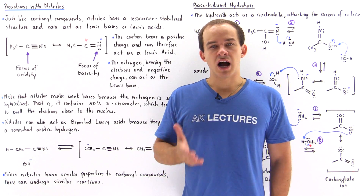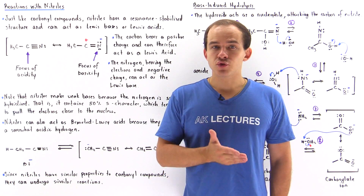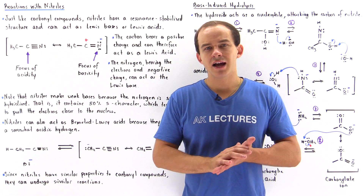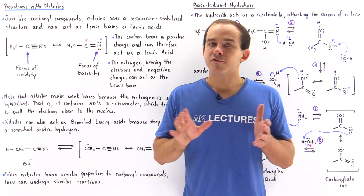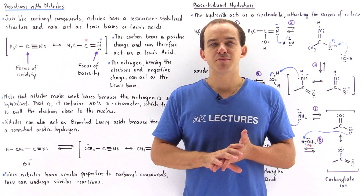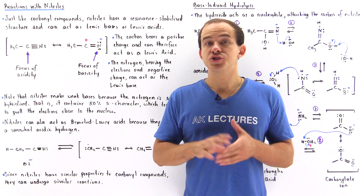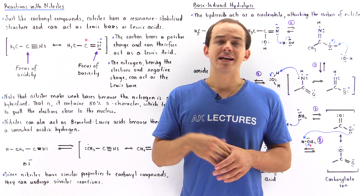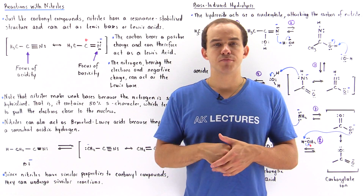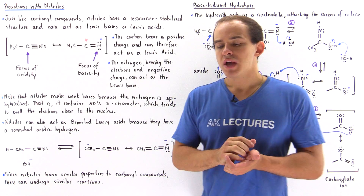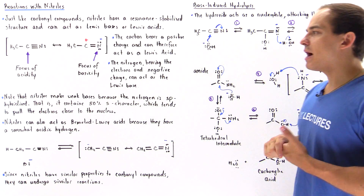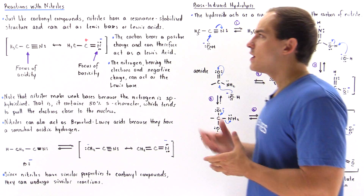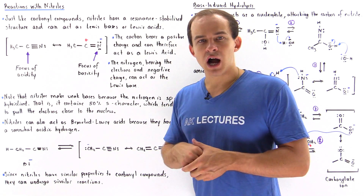Just like carbonyl compounds, nitrile compounds, also known as cyanides, have resonance-stabilized structures and basically can act as Lewis acids and Lewis bases. Let's begin by discussing the structure of a nitrile compound.